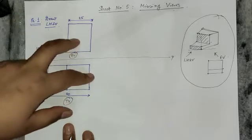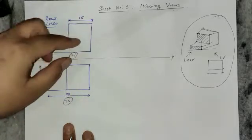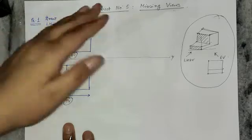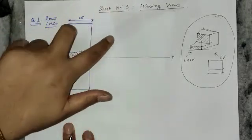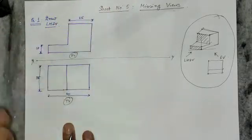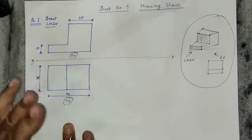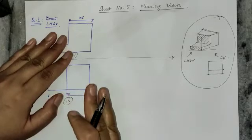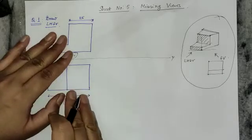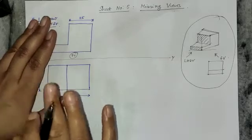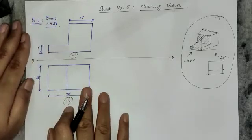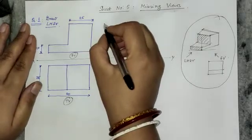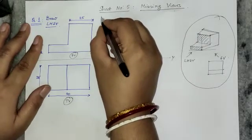One more thing: not every time will you be given front view and top view. Sometimes they may give front view and side view, and from those two you have to relate them and draw the top view. In either case, your task is to do imagination first and then apply your drawing principles to complete the required missing view.